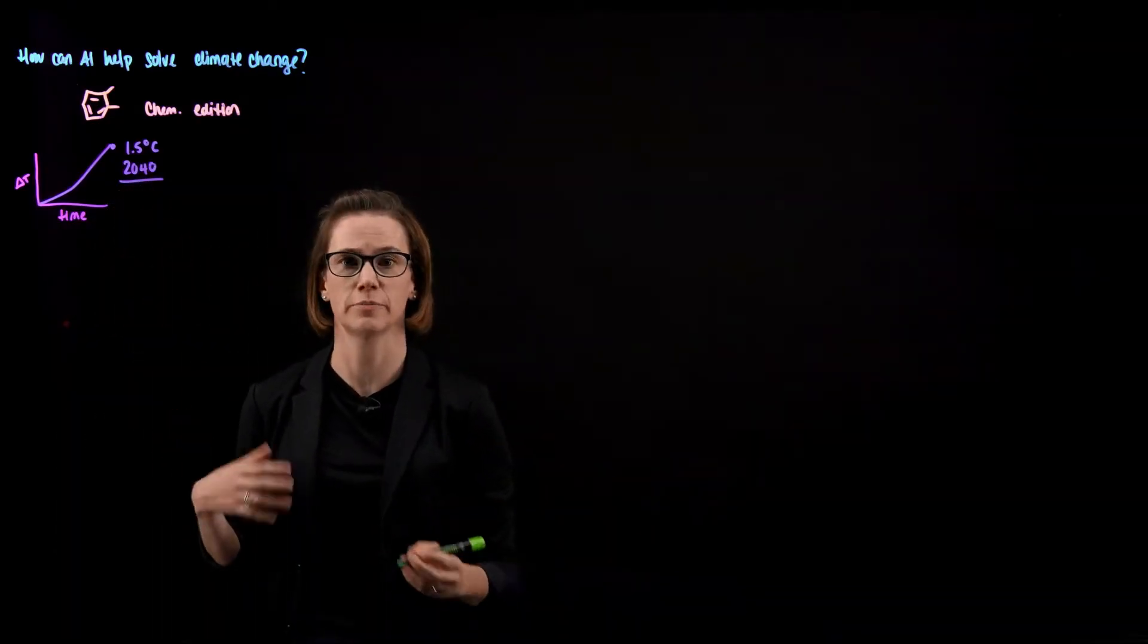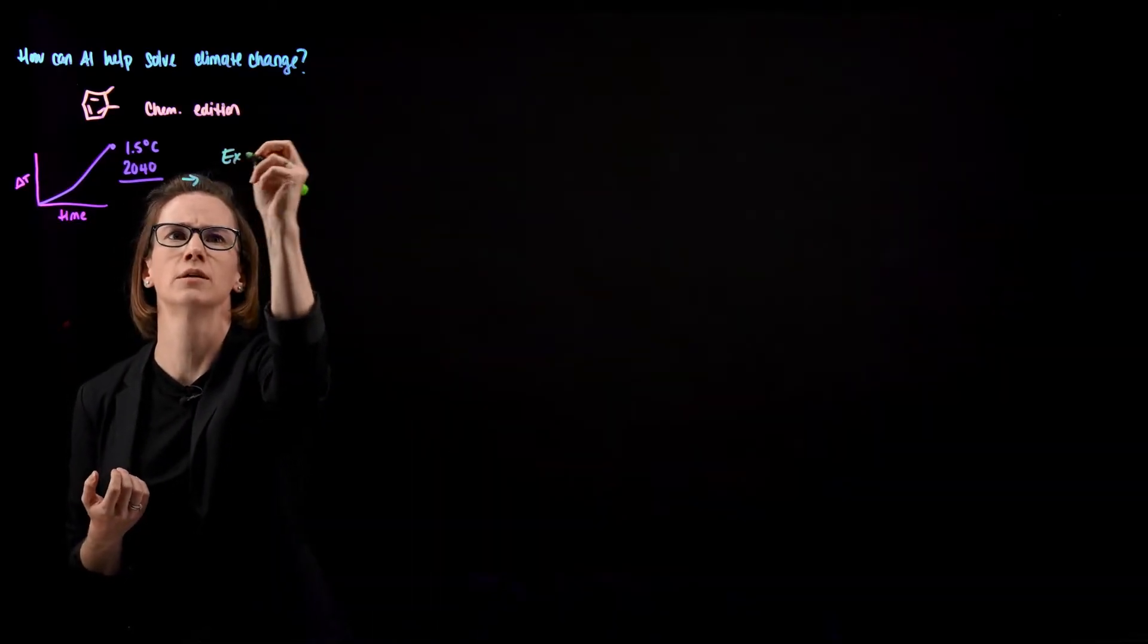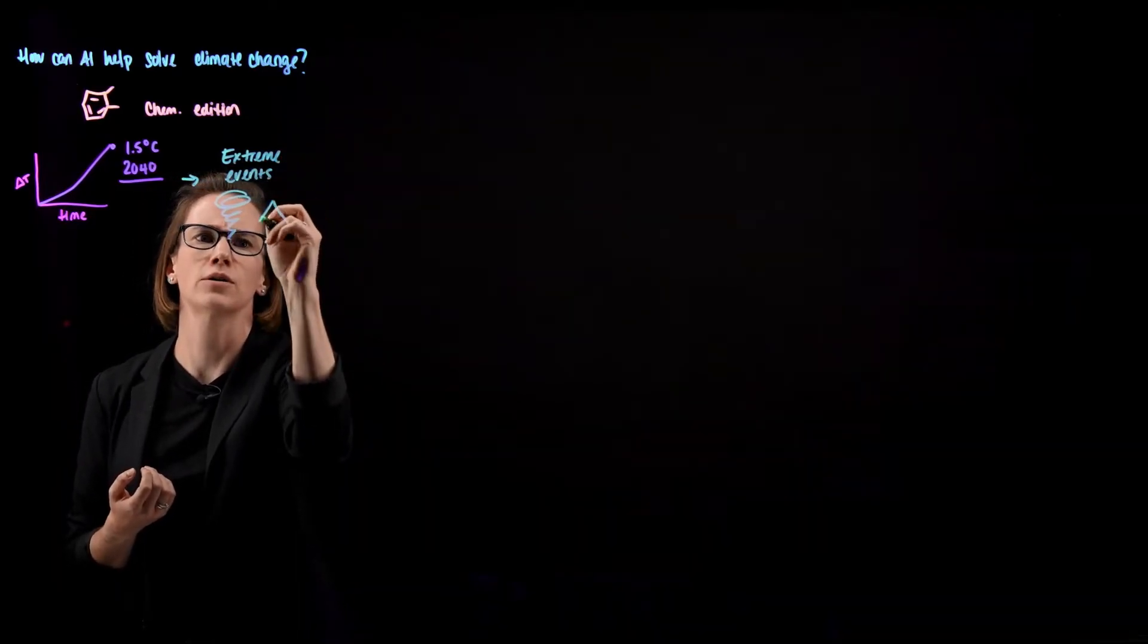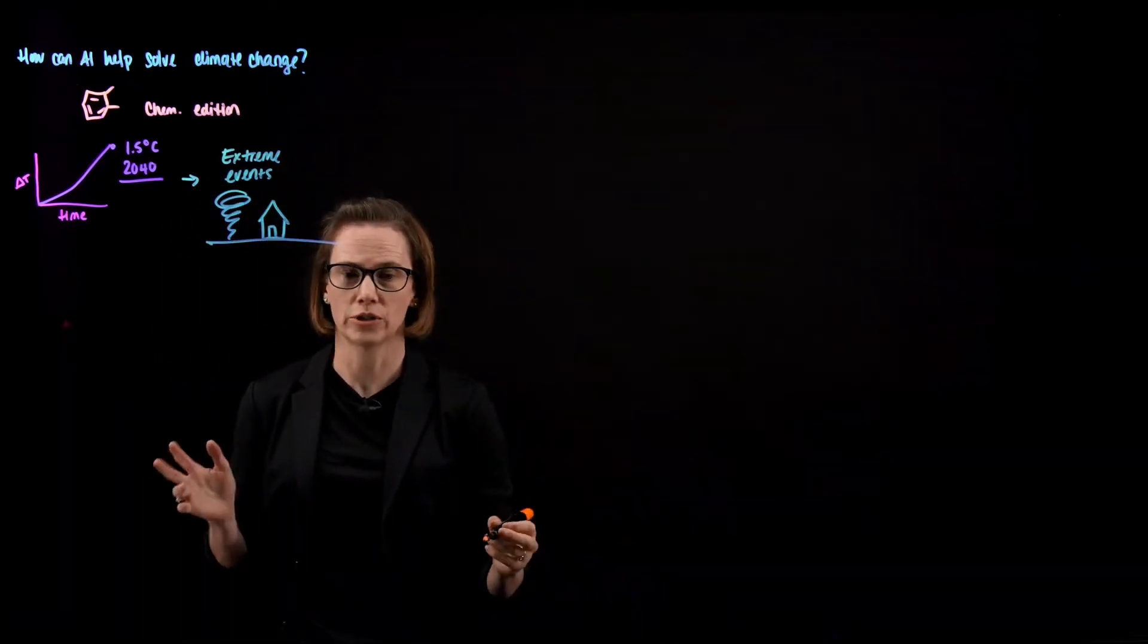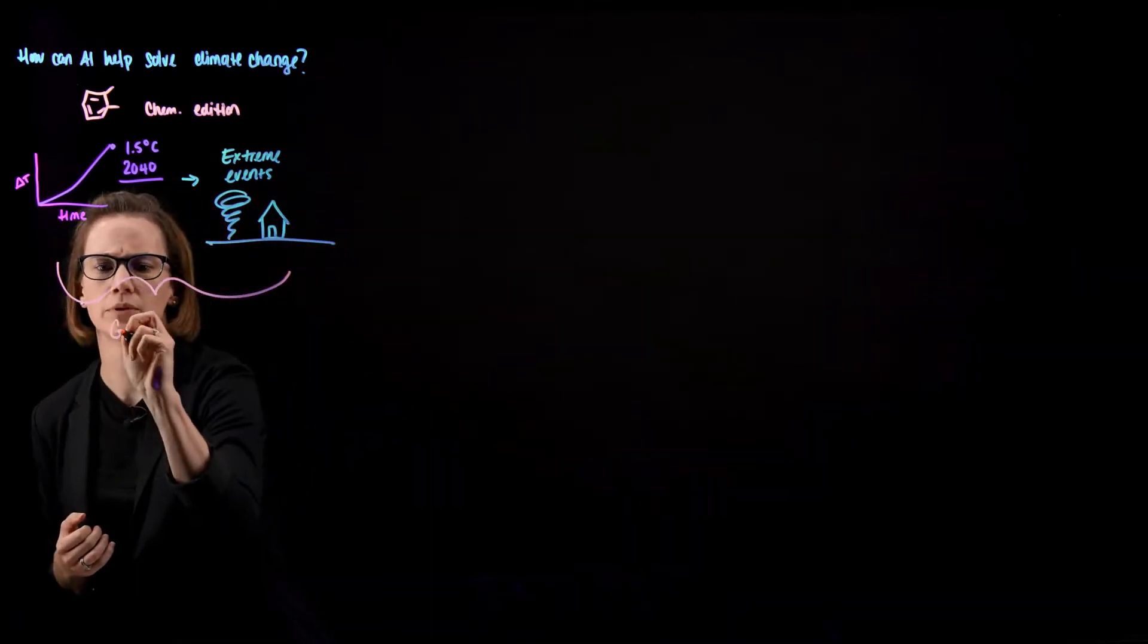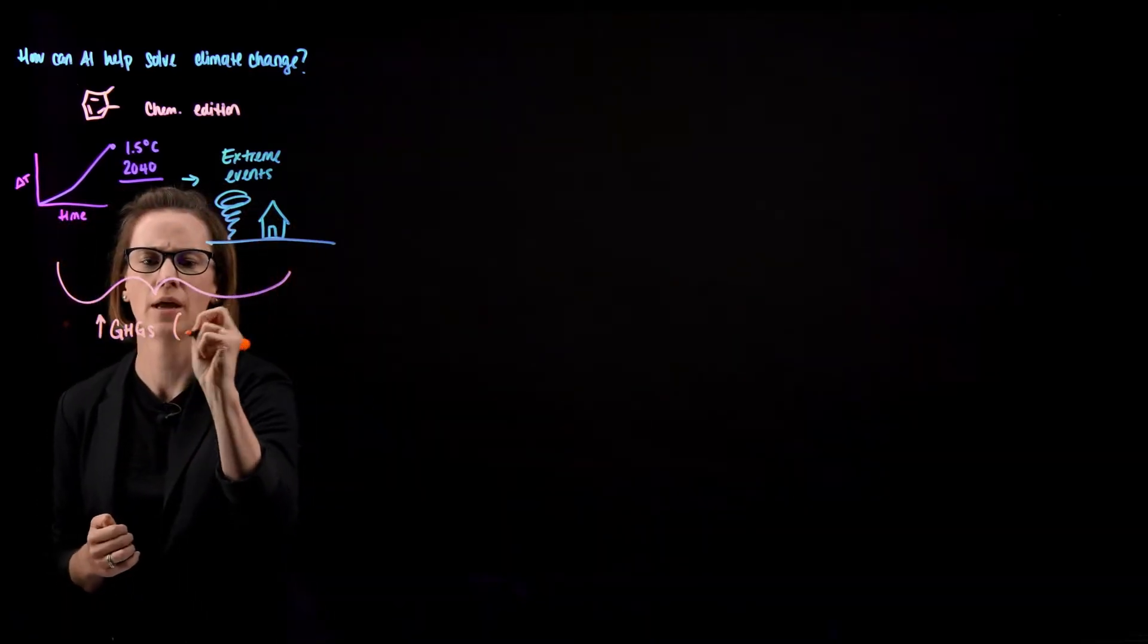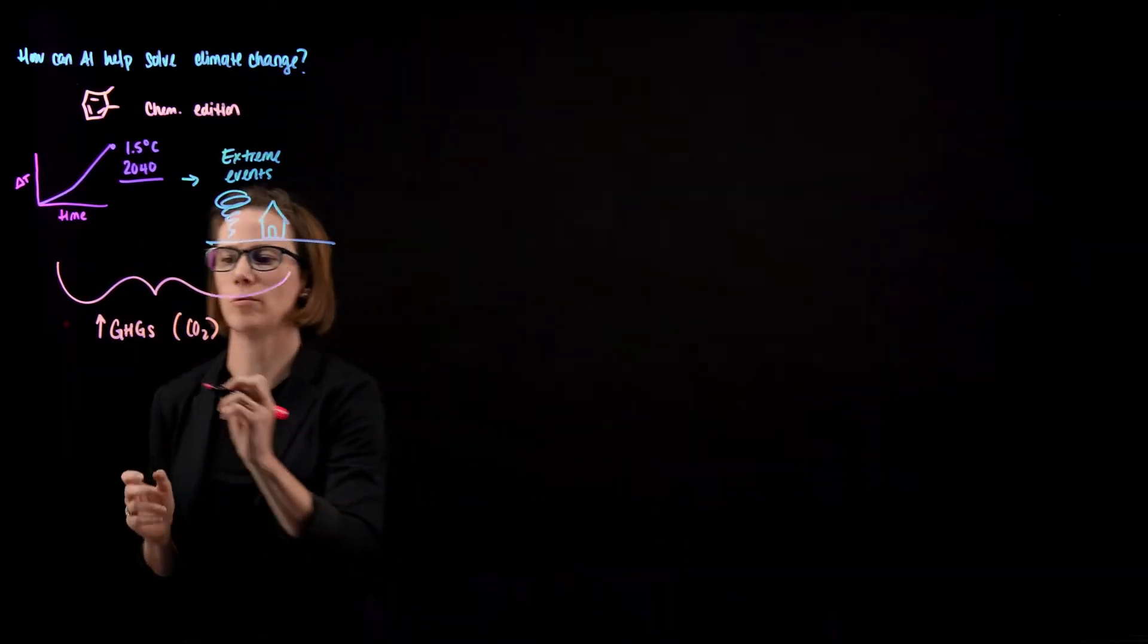And while 1.5 degrees Celsius may not seem like a whole lot of change, we know that this is going to lead to more extreme events like hurricanes, tornadoes, floods, et cetera. So we need to address this problem urgently. And at its core, this is really a chemistry problem. The reason that we're seeing this increase in global temperature is due to rising greenhouse gases and primarily carbon dioxide.